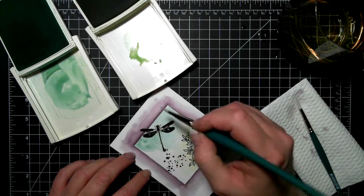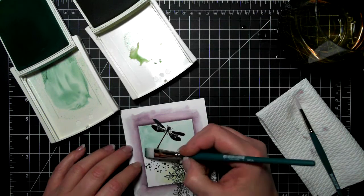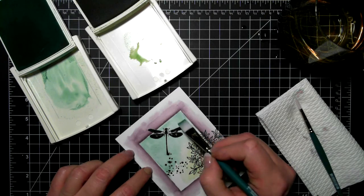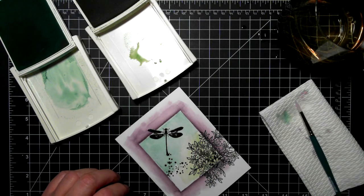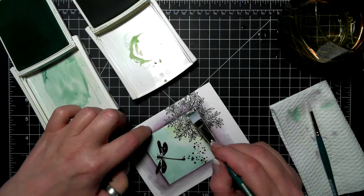So I'm just using my pear pizzazz and my mint macaron and using my flat brush to get that color on there and I just sort of want that water to allow it to blend itself and I'm just making a nice little happy scene.